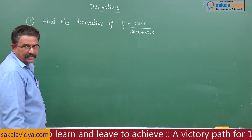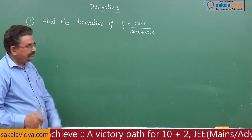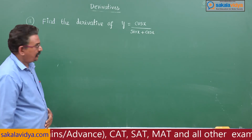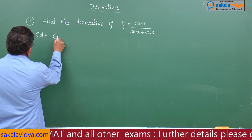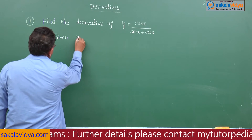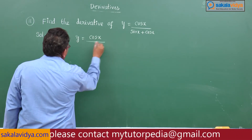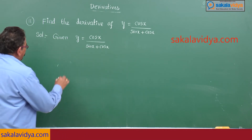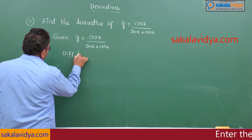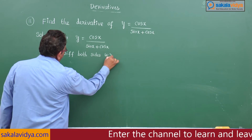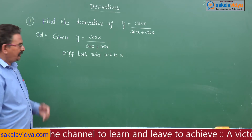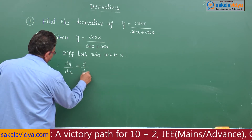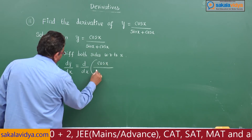Find the derivative of y equals cos x by sin x plus cos x. Given y equals cos x by sin x plus cos x, differentiate both sides with respect to x. This can be written as dy by dx equals d by dx of cos x by sin x plus cos x.